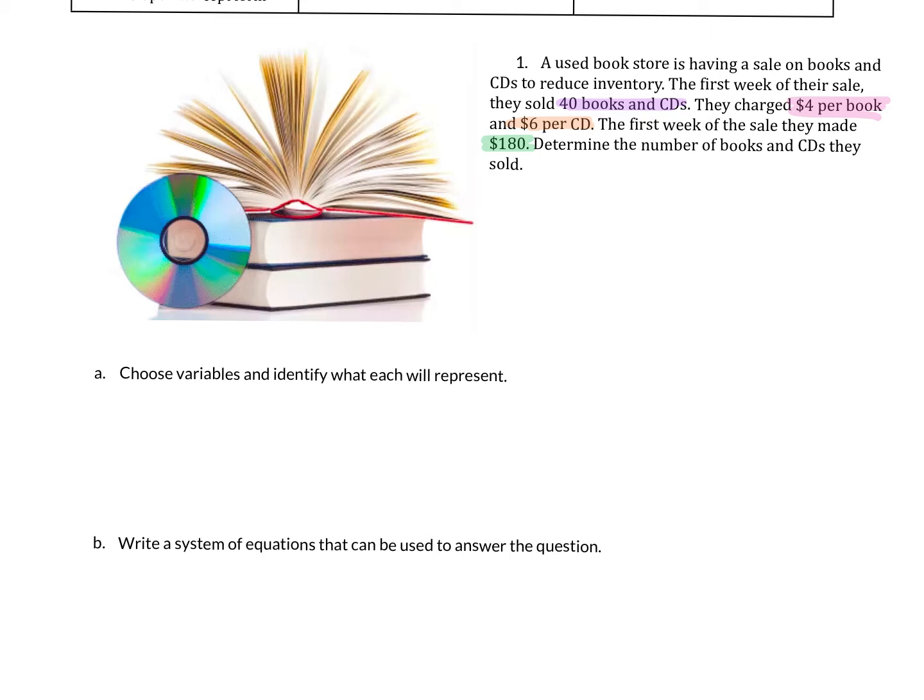To start this off we have to pick our variables. We have two variables and I want to know what are the two things we're trying to figure out. We're trying to figure out how many books and CDs they sold. So the number of books they sold, and then Y would be the number of CDs sold.